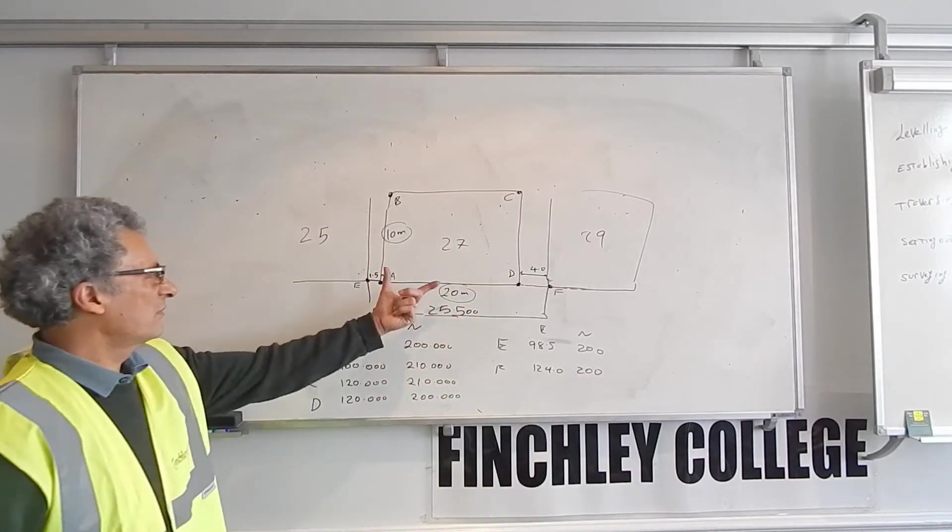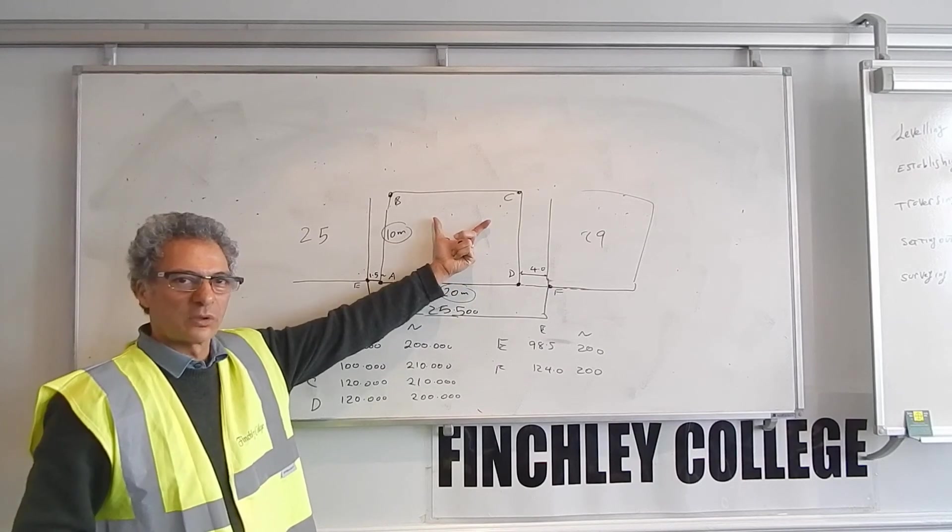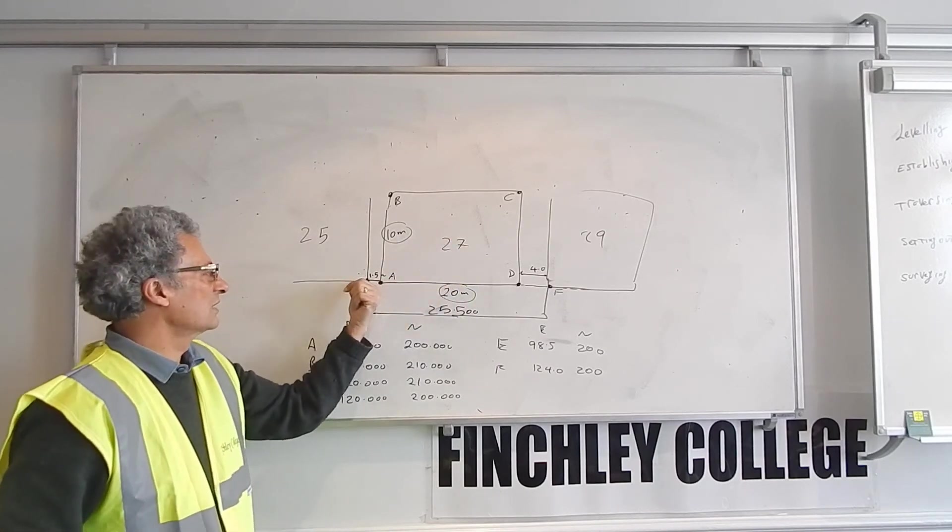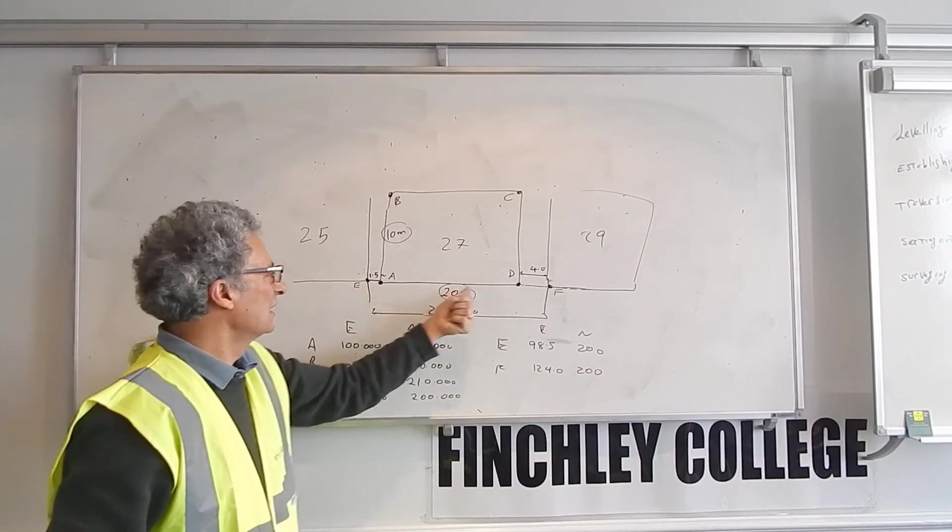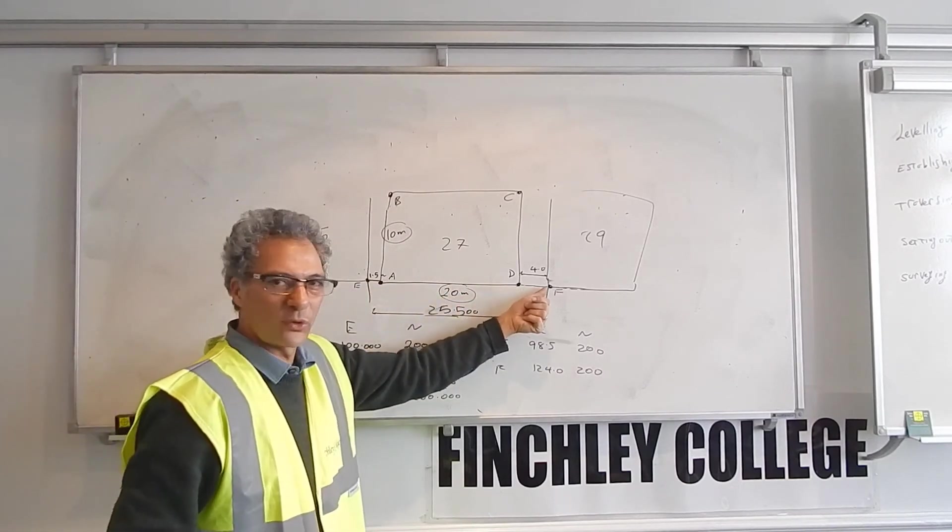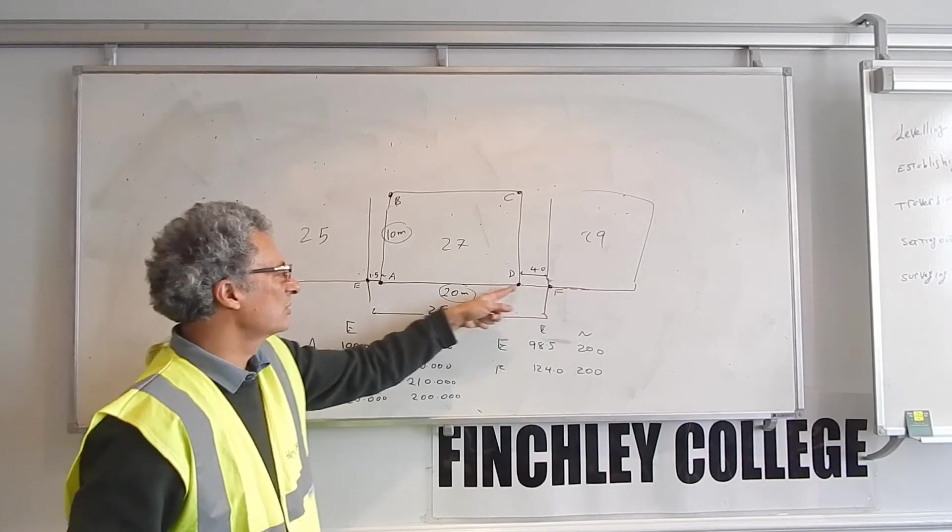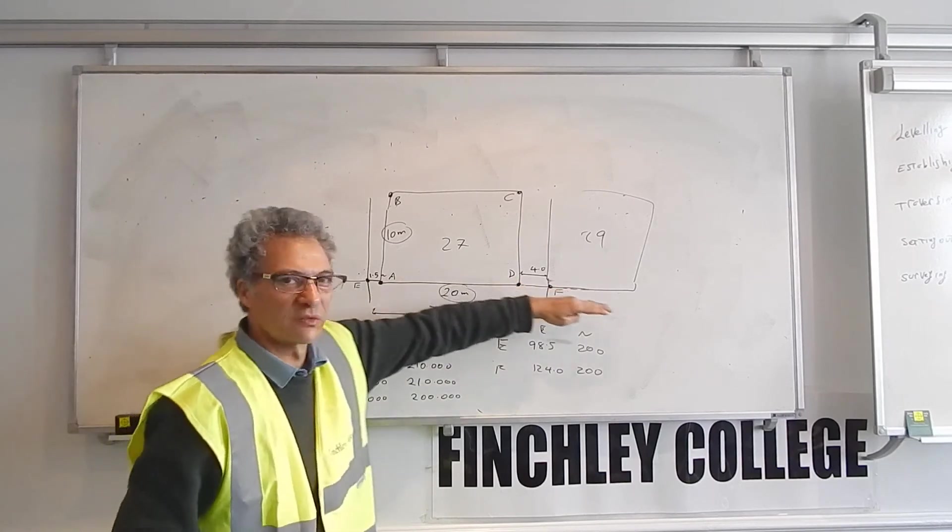So once I've decided on the coordinates for the corners of the building, I can work out the coordinates for these two, because I've already decided that's 100 plus 20, 120, plus 4, 124. And they're supposed to be in line, therefore the northing will be the same.